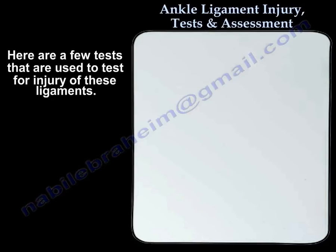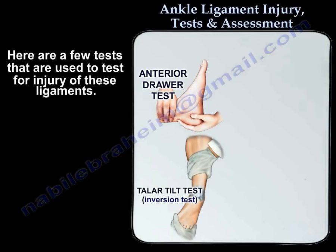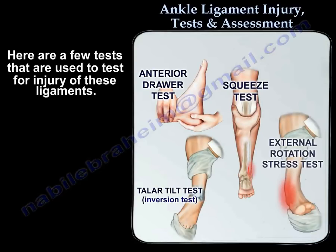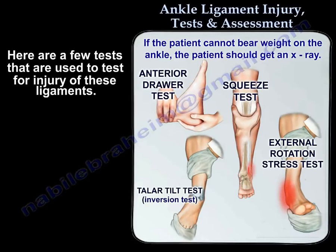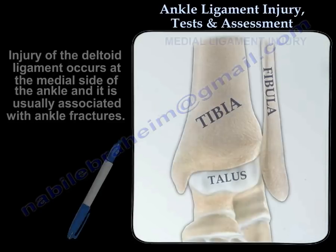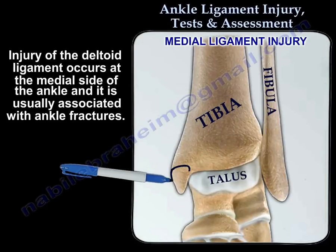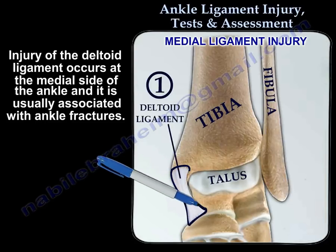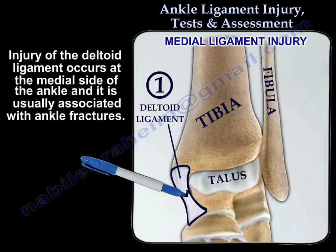Here are the few tests that are used to check for injury of these ligaments. If the patient cannot bear weight on the ankle, the patient should get an x-ray of the ankle. Injury of the deltoid ligament occurs at the medial side of the ankle, and it is usually associated with ankle fractures.